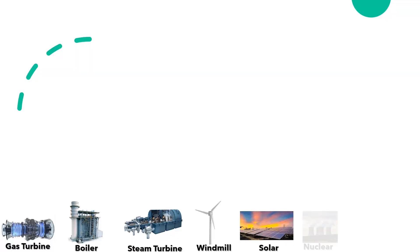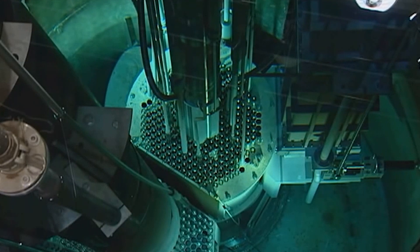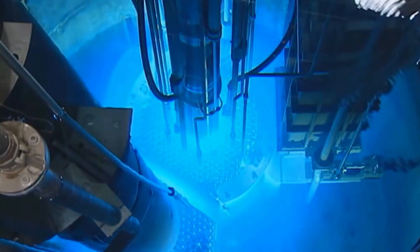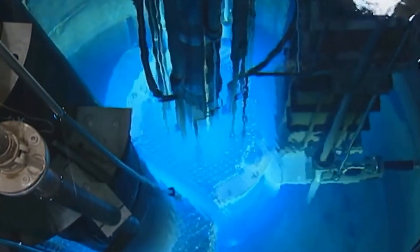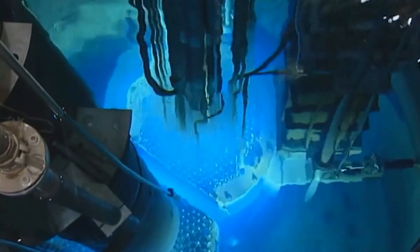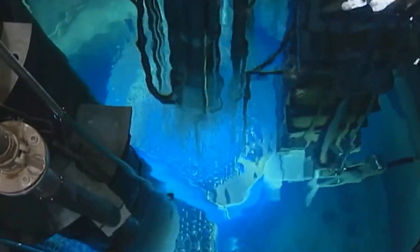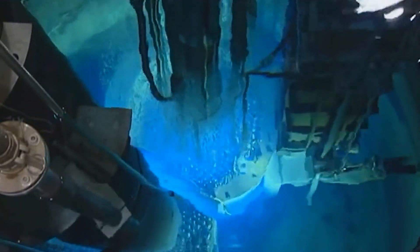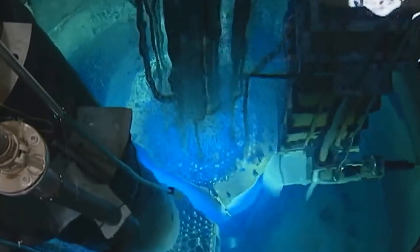Nuclear power reactors use heat produced during atomic fission to boil water and produce pressurized steam. The steam is sent through the reactor steam system to spin large turbine blades that drive magnetic generators to produce electricity.